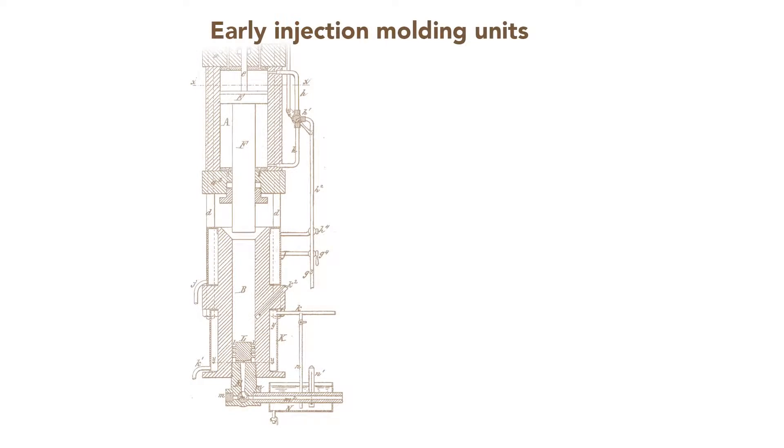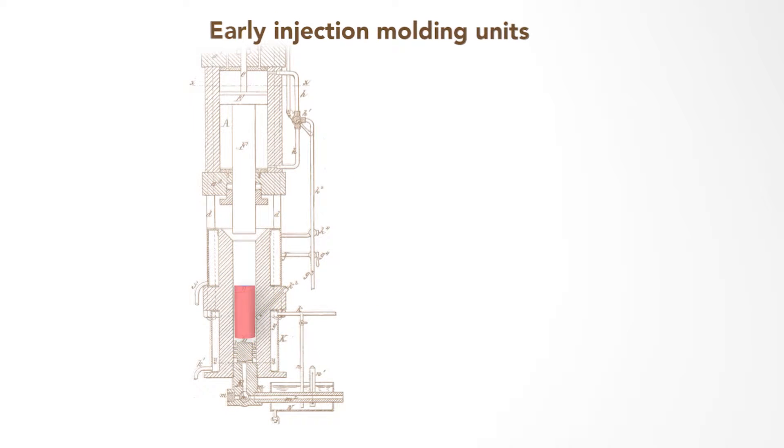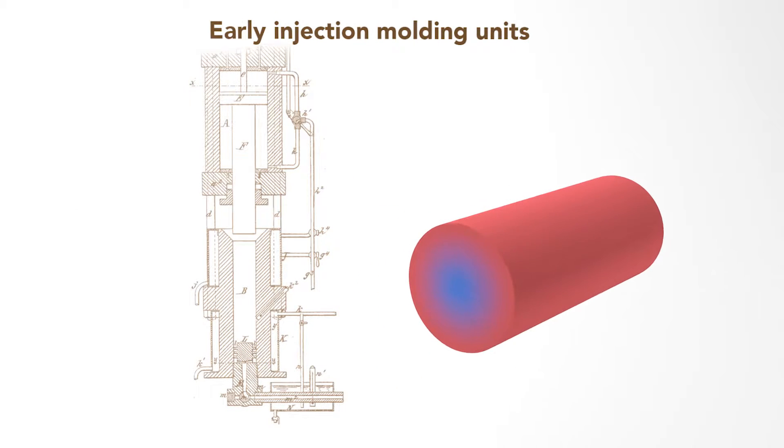Before the mid-20th century, injection molding machines used only external heating of the barrel to melt the plastic before a plunger injected the molten material. But because plastic conducts heat poorly, the temperature was uneven in the barrel. Either the middle was too cool and not fully melted, or the outer regions were too hot and degraded the plastic.